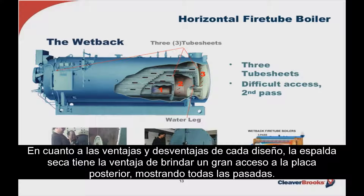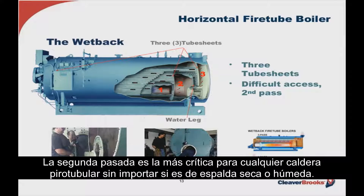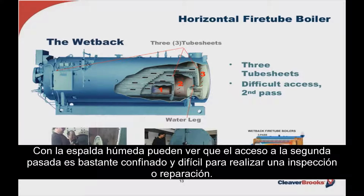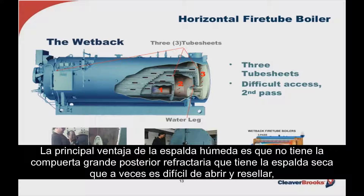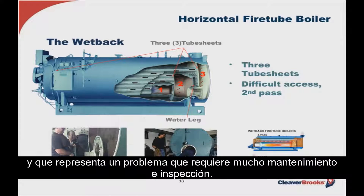As for advantages and disadvantages: the dry back has the distinct advantage of providing easy accessibility to the rear tube sheet, revealing all the passes — the second pass being the most critical in any fire tube border. With the wet back, access to the second pass is very confined and difficult to work in when inspecting or repairing. The main advantage of the wet back is the elimination of the heavy refractory-filled rear door found on the dry back, which is sometimes cumbersome to open and reseal and is an ongoing inspection and maintenance issue.